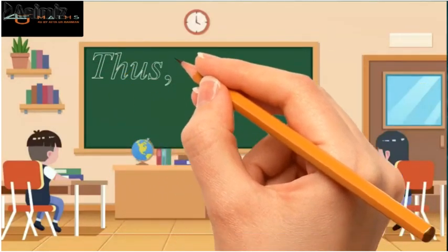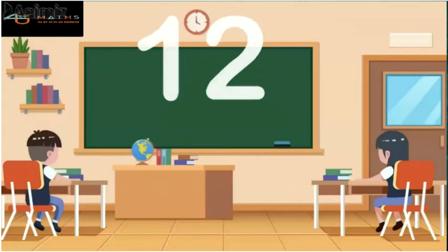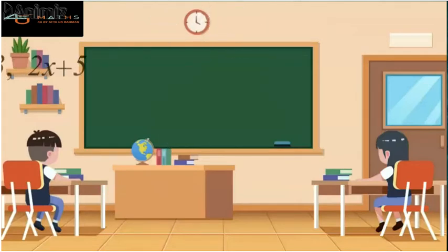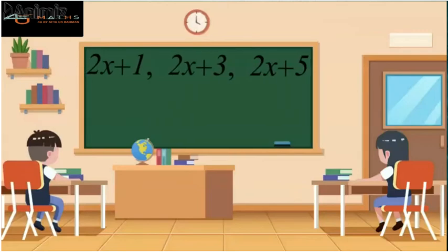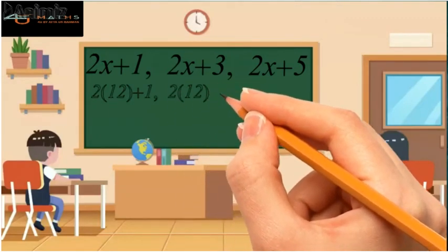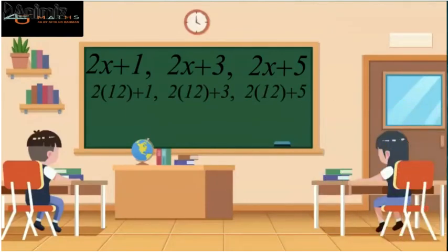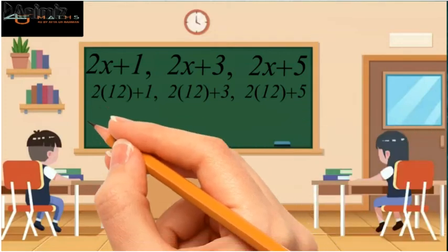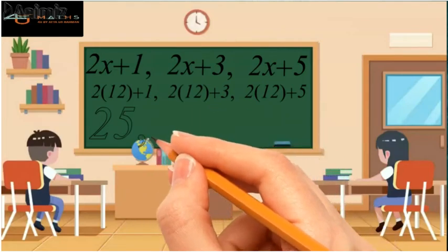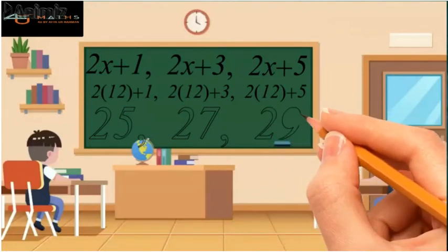Now to find the required consecutive odd integers, we will replace the value of x equals 12 in the supposed numbers. That is, we have 2 times 12 plus 1, 2 times 12 plus 3, and 2 times 12 plus 5. Simplifying these, we get 25, 27, and 29, which are the three consecutive odd integers.